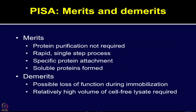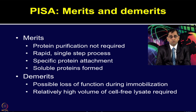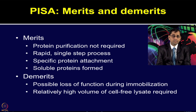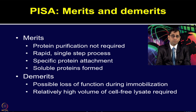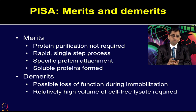After learning the working principle of PISA, let us discuss its advantages and disadvantages. PISA overcomes the traditional purification requirements for producing protein microarrays — protein purification is not essential. It gives a rapid single-step process. Because of the histidine tag and nickel-NTA interaction, specific protein attachment can be achieved. Soluble proteins are formed, which is a major advantage. Limitations include possible loss of protein function during the immobilization step, and the cell-free lysates are very costly, making high-volume requirements a cost-based limiting factor.